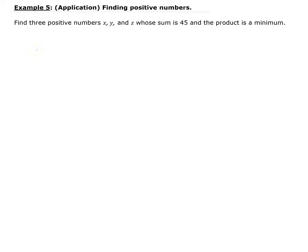In this example, we want to find three positive numbers — let's call those x, y, and z — whose sum is 45 and whose product is a minimum. So let x, y, and z represent positive numbers.